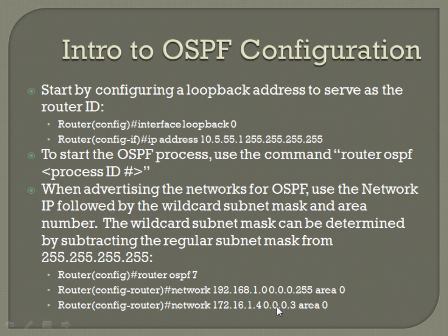For the full configuration: router OSPF, then your process ID — in this case 7. That jumps you into router configuration mode. Then: network 192.168.1.0, it's a /24 so the wildcard mask is 0.0.0.255, then space and then your area number. These routers are in area 0, so they're identified as such. Then the same thing for the other network being advertised on that router.